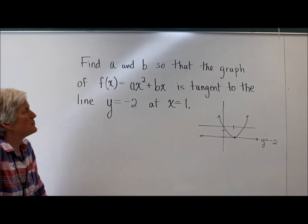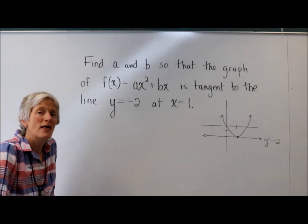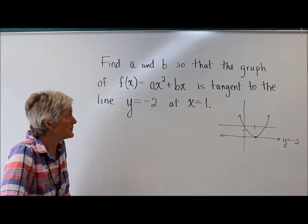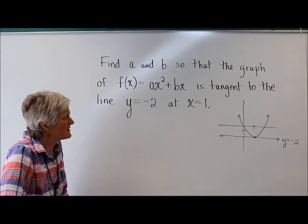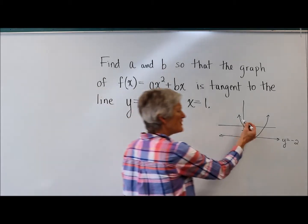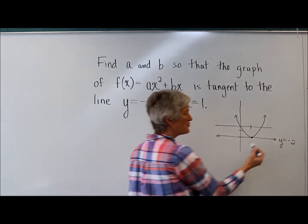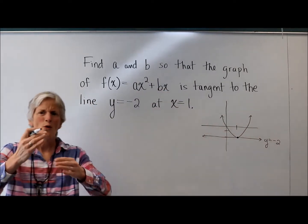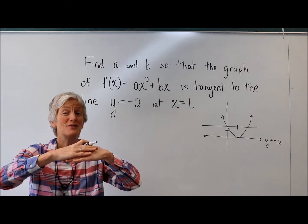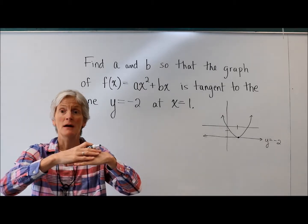So I need to find a and b. I have two things I need to find. So let's see. If I'm thinking about this parabola being tangent to that line, what that means, of course, is that their slopes have to be equal.